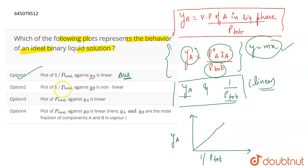The next is plot of 1 by P total against YB is going to be non-linear. This is incorrect because YB is going to behave the same way YA is behaving. So the curve between YB and 1 by P total is also going to be linear, because YB is for the B component and YA is for the A component. But both behave in the same way. The curve is going to be the same.